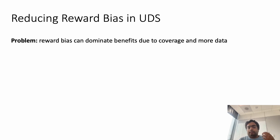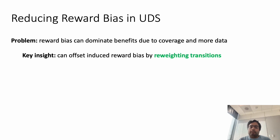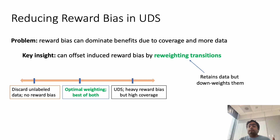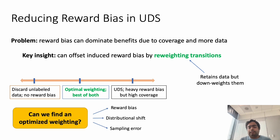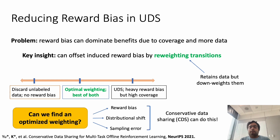The main issue with UDS is that it induces a reward bias problem, which can potentially outweigh the benefits of coverage and having more data. To offset this reward bias, our key insight is that we can still use UDS but simply re-weight the transitions in the unlabeled dataset to reduce the impact of reward bias. We retain all of the unlabeled data and still train on it, but downweight transitions that would contribute more to reward bias. To do so, we find an optimized weighting scheme that balances reward bias, distributional shift, and sampling error. It turns out that Conservative Data Sharing, or CDS, from our prior work at NeurIPS, can be an effective tool — it prioritizes transitions based on the learned conservative Q-value of the algorithm.